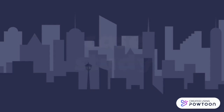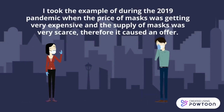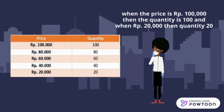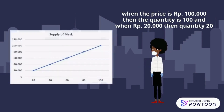Case study: during the COVID-19 pandemic, the price of masks was getting fairly expensive and the supply of masks was very scarce, making them costly and unaffordable. When the price is 100,000, the quantity is 100. And when the price is 20,000, the quantity is 20.